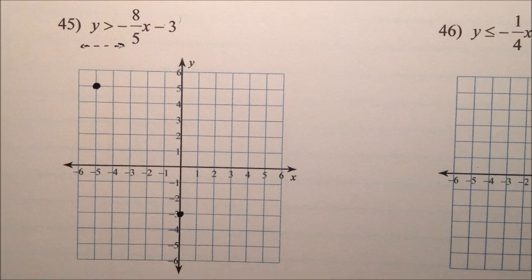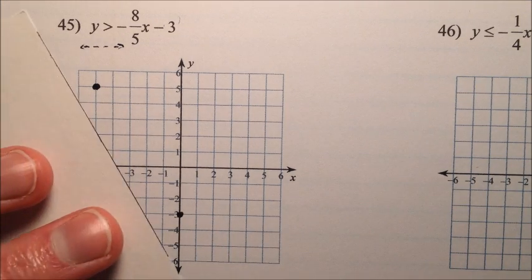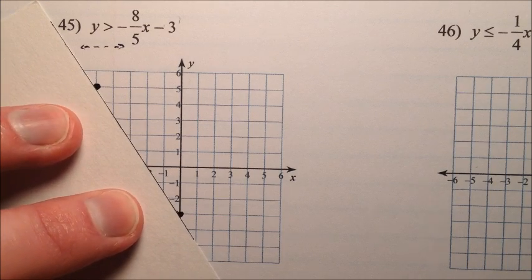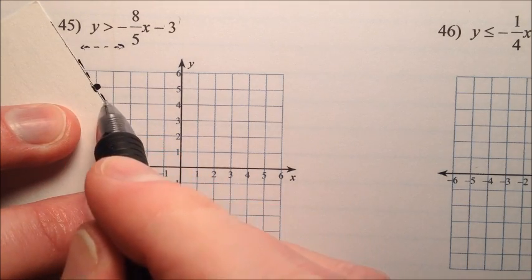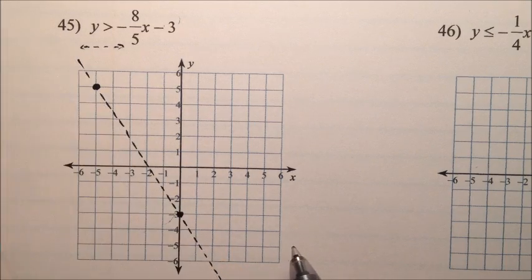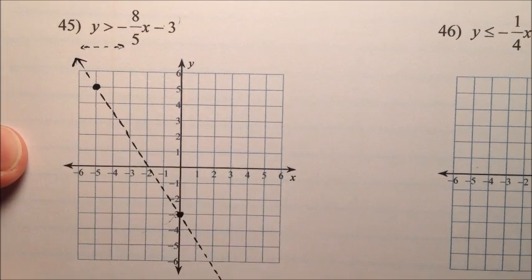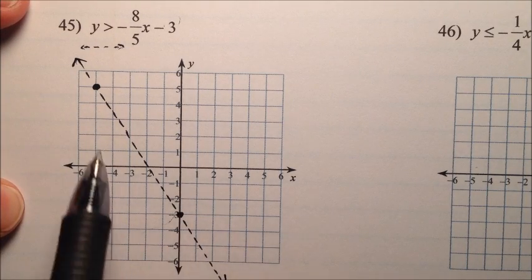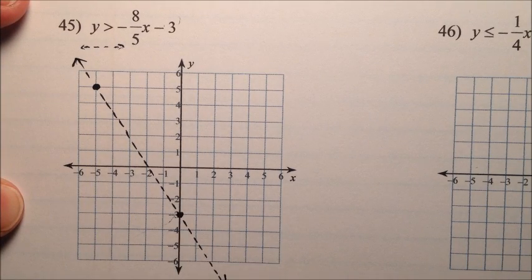Okay, so I'm going to grab my handy dandy note card here, and I'm going to draw my line, and my line should be a dashed line because it's just greater than. So we'll do one of these things, a nice dashed line, put arrows on each end indicating that the lines go indefinitely in both directions.